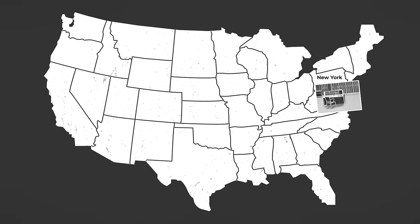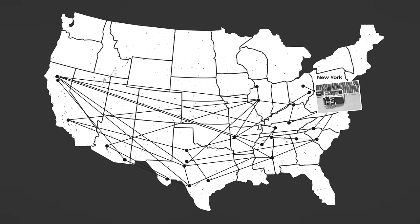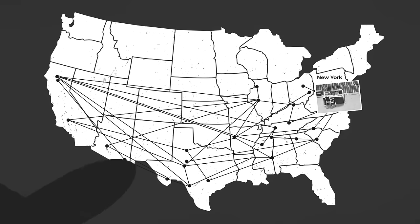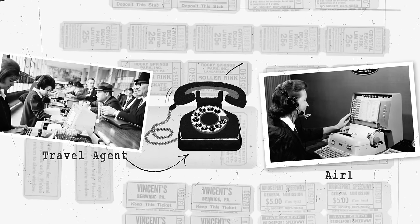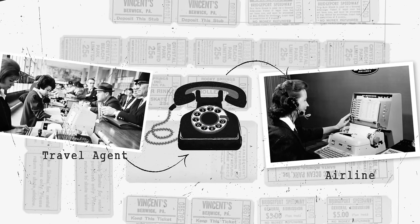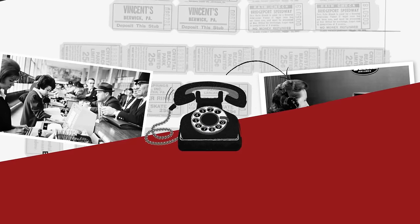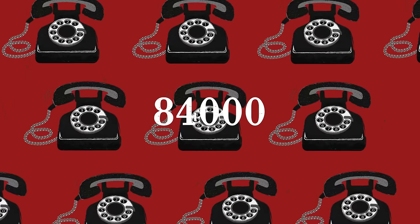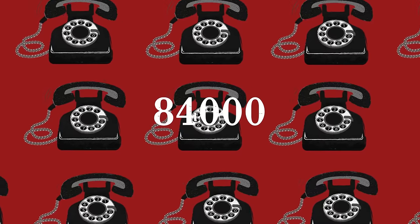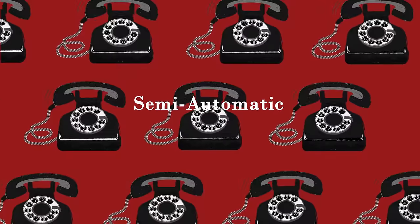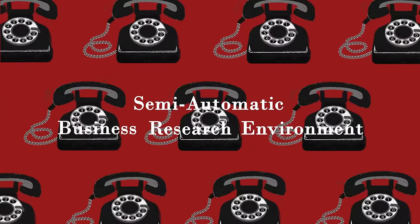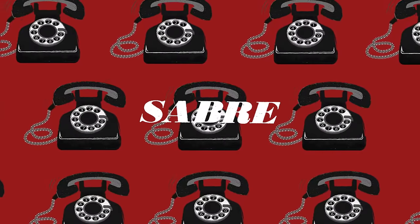That computer was connected to 1,500 American Airlines remote terminals across the country. To make a reservation, you contacted a travel agent who then reached the airline by phone to reserve a seat. That system could process up to 84,000 telephone transactions per day. Its full name, Semi-Automatic Business Research Environment, was simplified to Sabre.